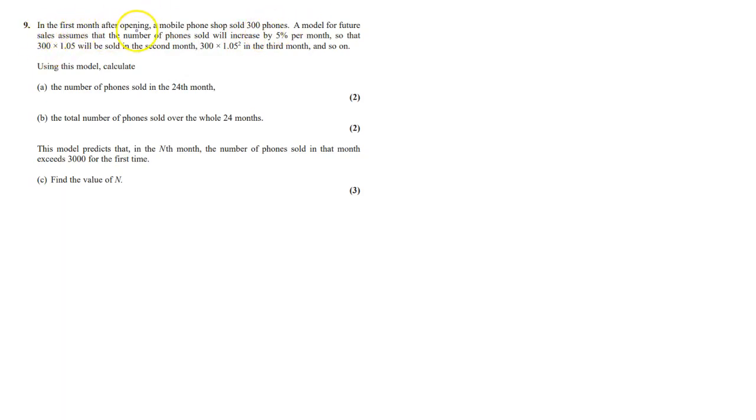Question number 9. In the first month after opening a mobile phone shop sold 300 phones. A model for future sales assumes that the number of phones sold will increase 5% per month, so that 300 times 1.05 will be sold in the second month, 300 times 1.05 square in the third month, and so on.